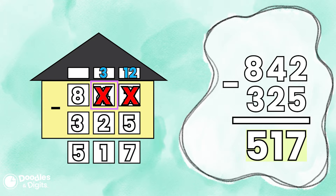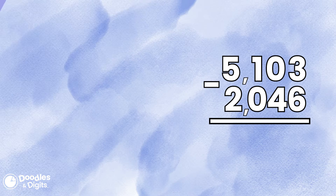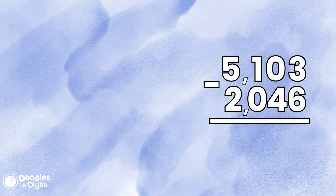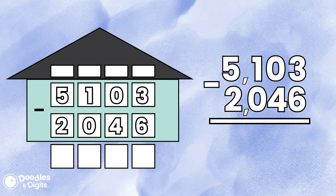Let's try another one: 5,103 minus 2,046. We're going to first put this number in a place value chart. I want you to notice something though — what do you think might happen when we borrow? We're going to have to do something a little different on this problem.